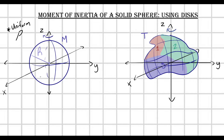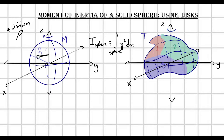One way that we could do this would just be to use the definition of the moment of inertia. I could say that I of my sphere is just defined as the integral over my entire sphere of γ² dm, where γ is the perpendicular distance to each of the little infinitesimal mass units dm.